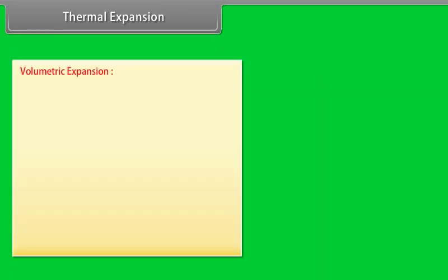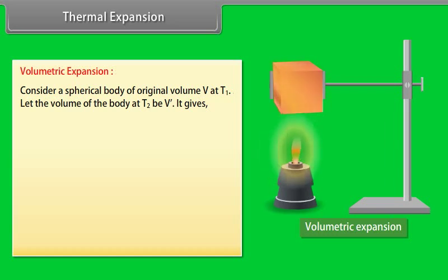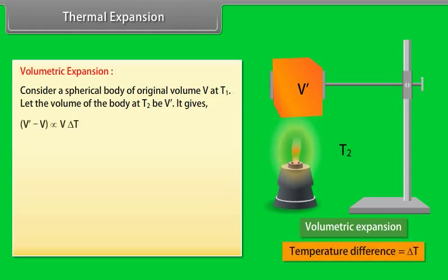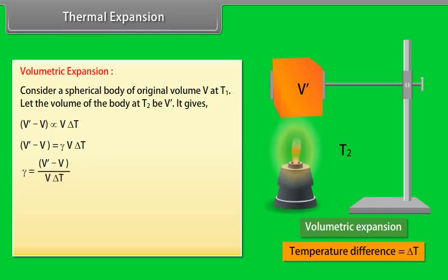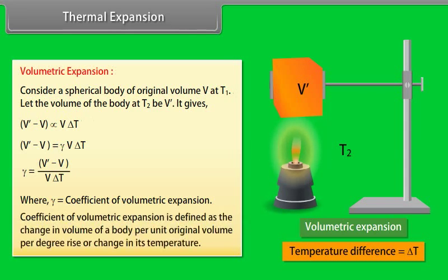Volumetric expansion: Consider a spherical body of original volume V at temperature T1. Let the volume at temperature T2 be V dash. It gives: V dash minus V is directly proportional to V delta T, or V dash minus V is equal to gamma V delta T. The value of gamma equals (V dash minus V) upon V delta T, where gamma is the coefficient of volumetric expansion, defined as the change in volume per unit original volume per degree rise in temperature.